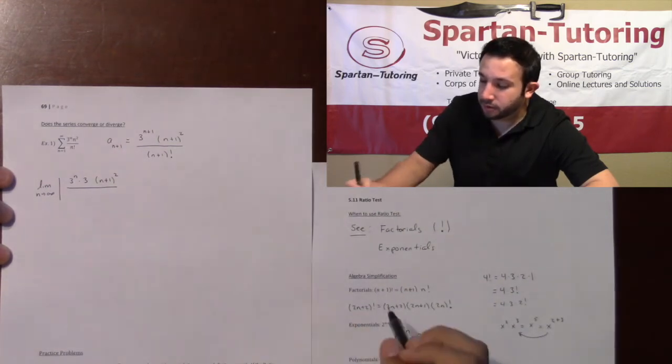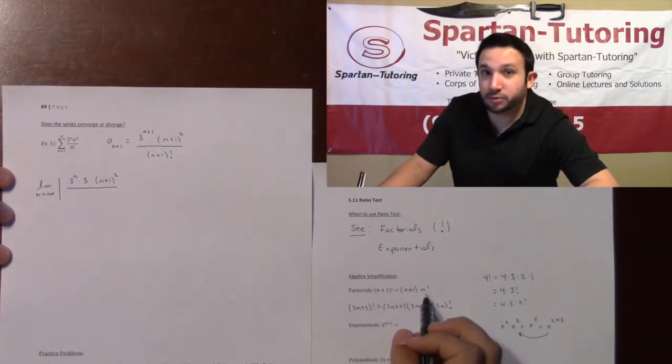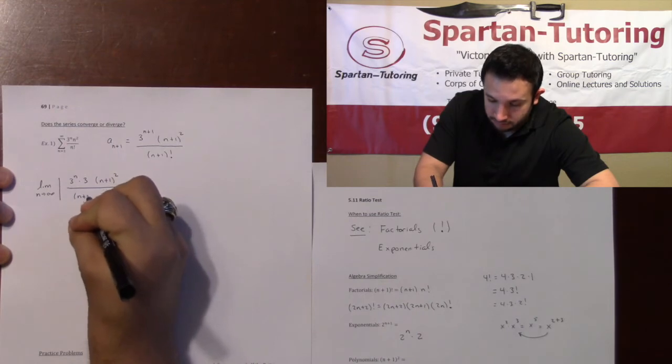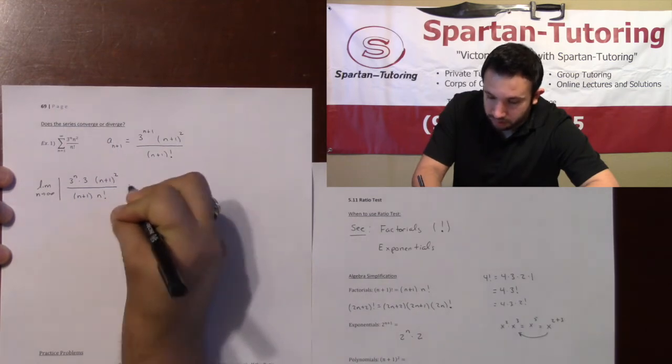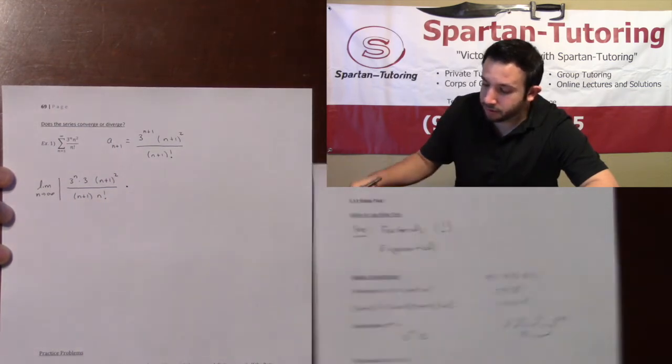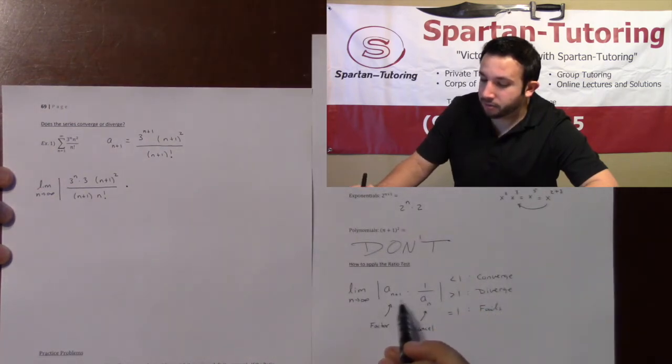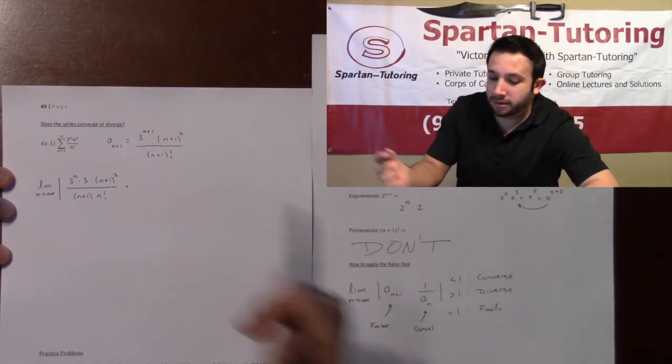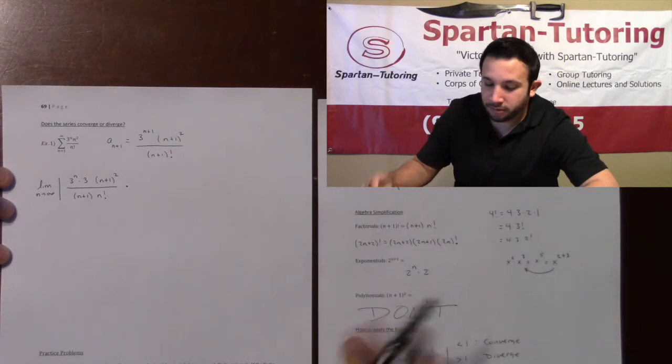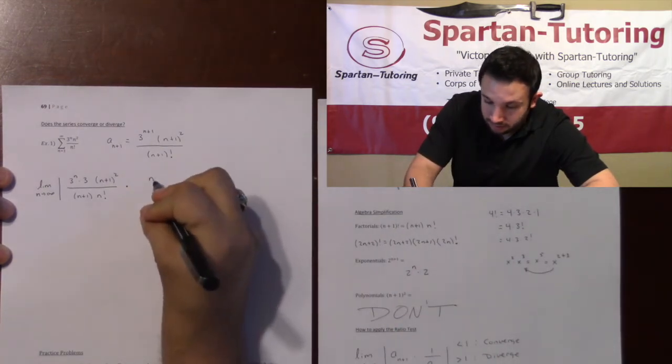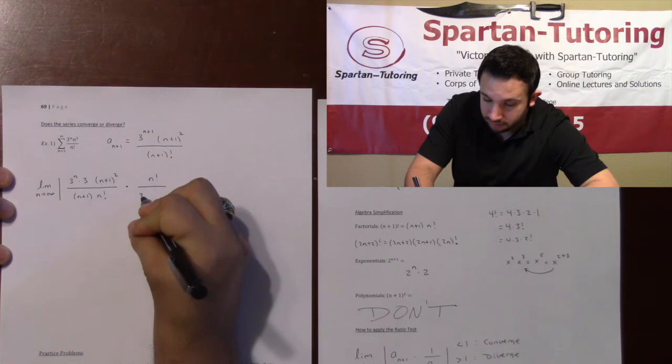This n plus 1 squared is a polynomial—you'll leave it alone—n plus 1 squared. And then the factorial: if you have n plus 1 factorial, I can make that n plus 1 times n factorial. And what I'm going to do is I'm going to multiply this. That was your a_n plus 1. Now it's multiplied by your a_n flip, by your original problem.